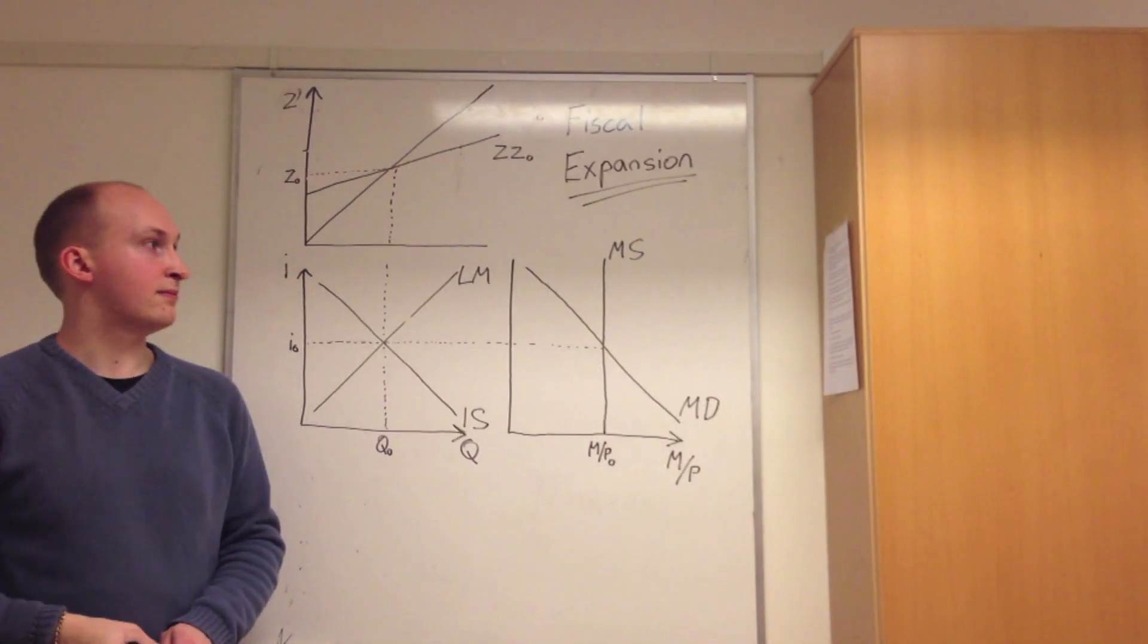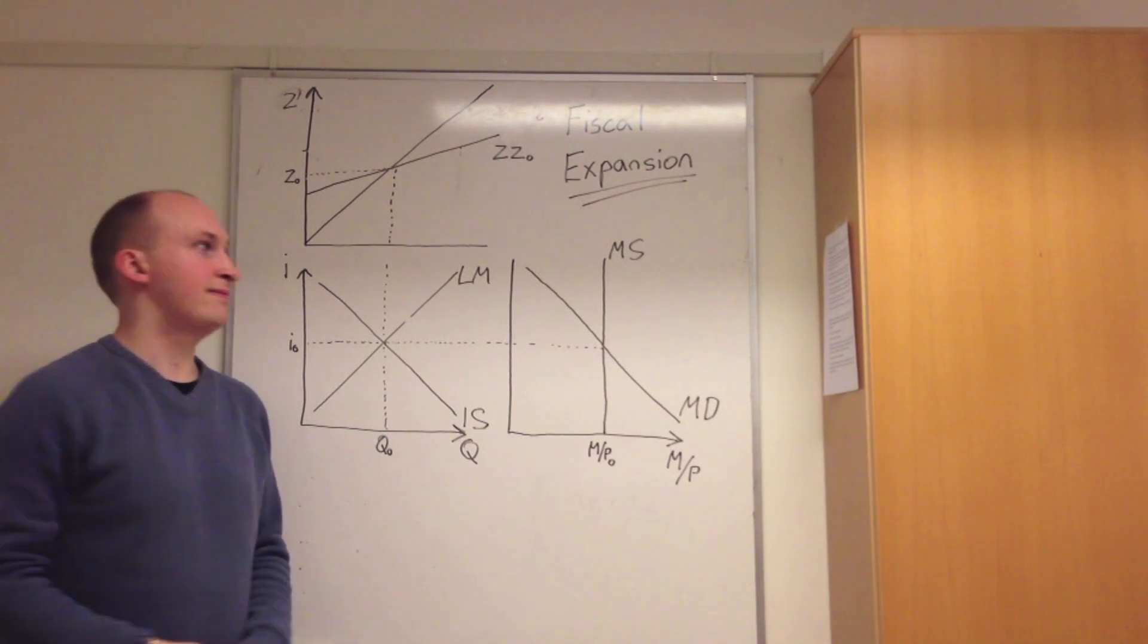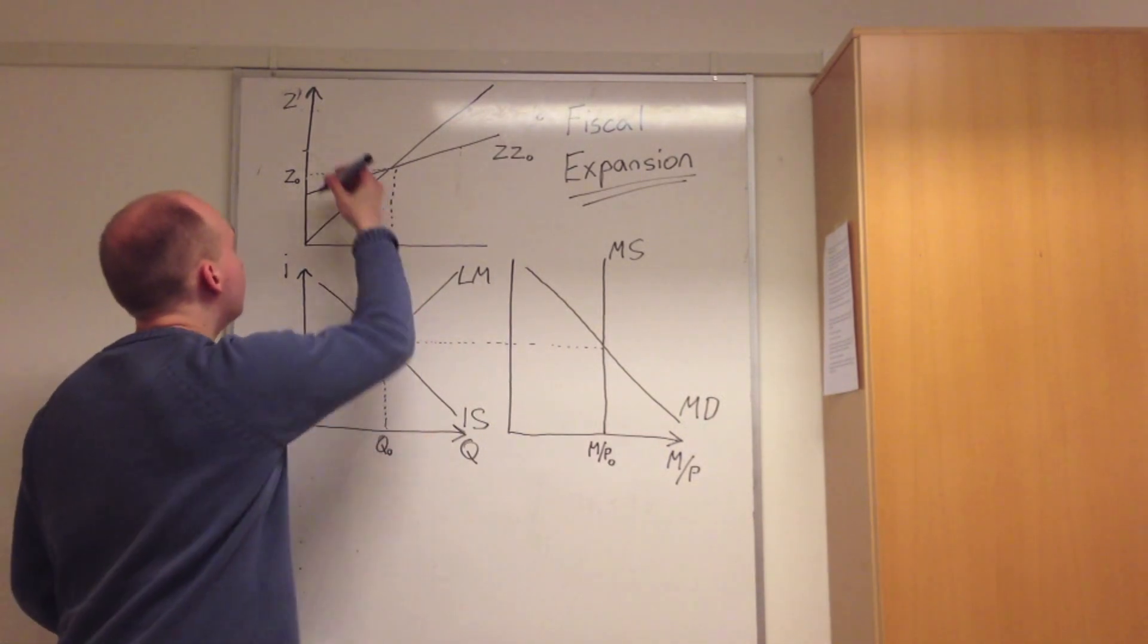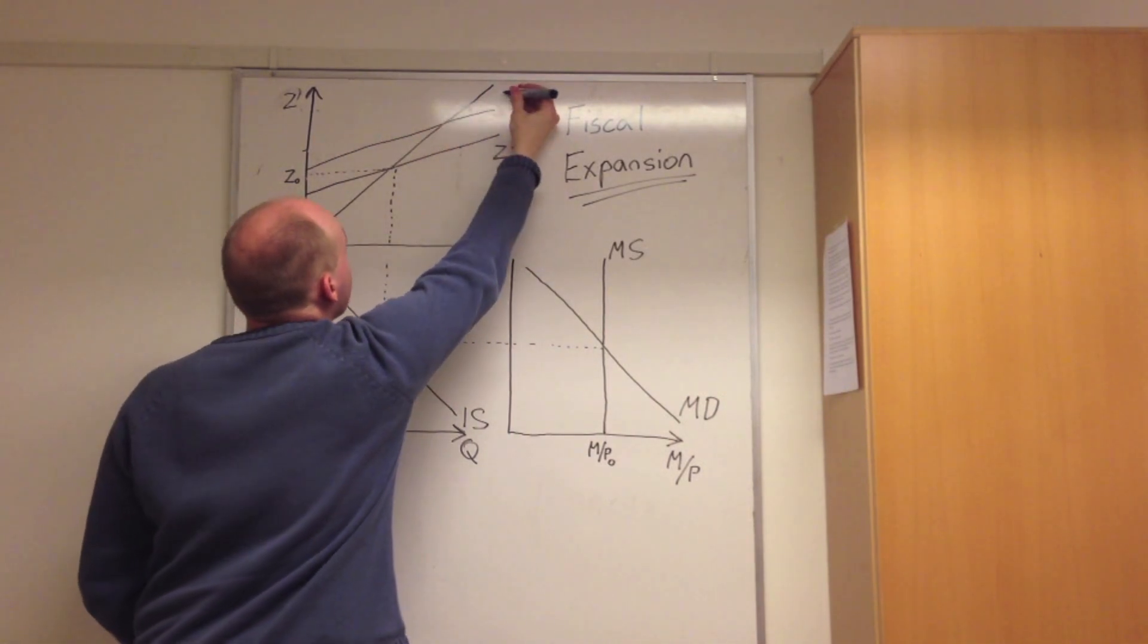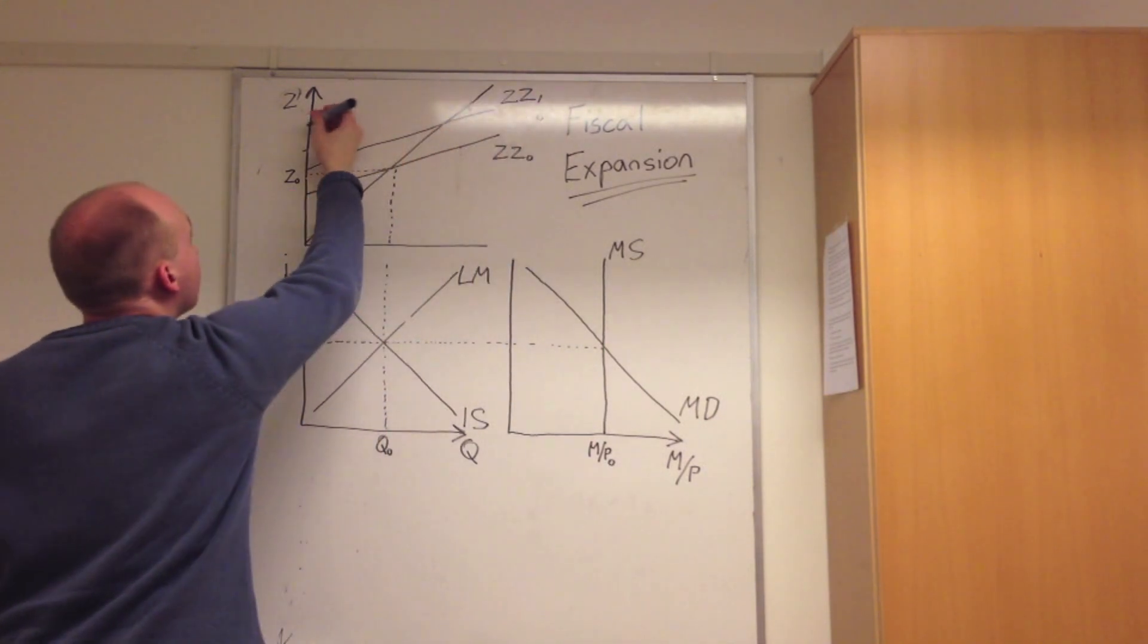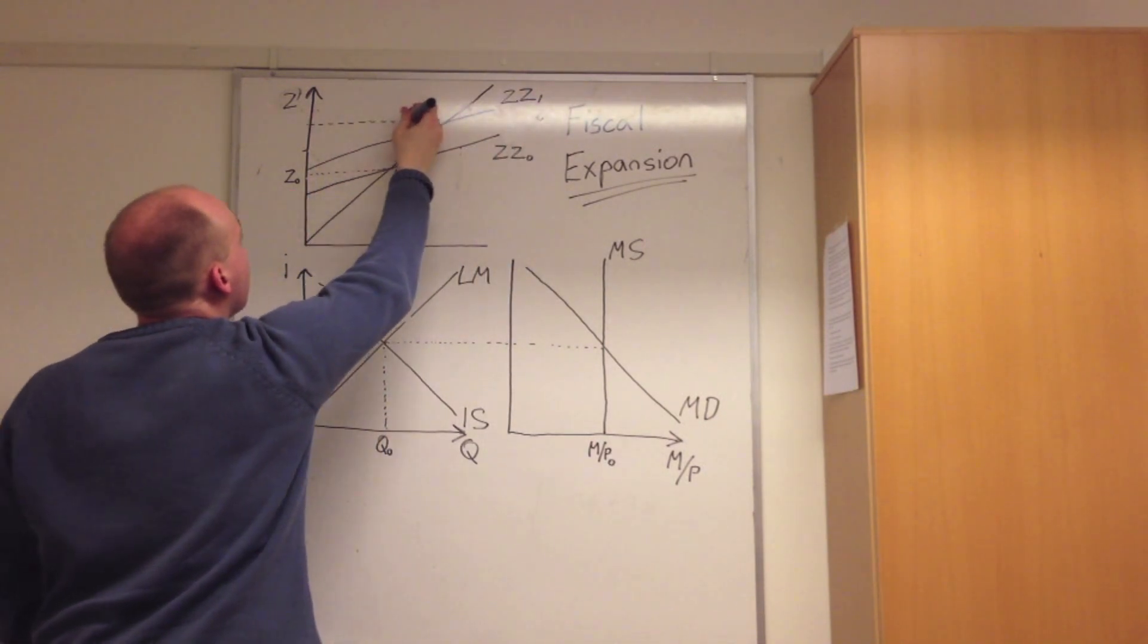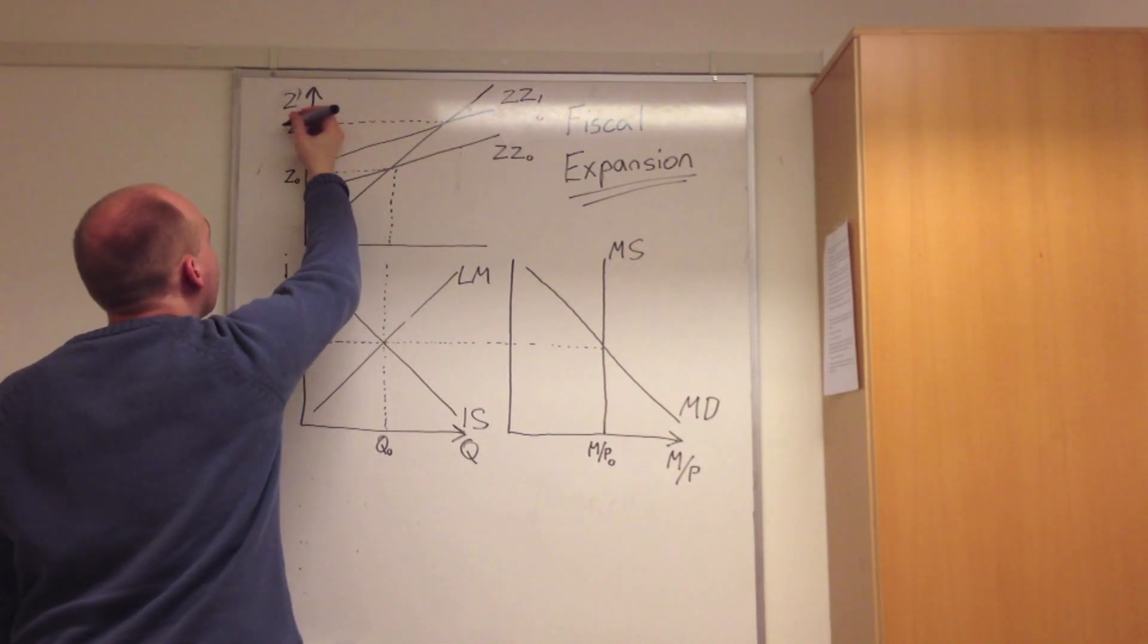But suppose the government enacts fiscal expansion through raising government spending. This would actually raise the demand curve from ZZ0 to ZZ1. Of course this is denoted at the top through Z1, our second aggregate demand value.